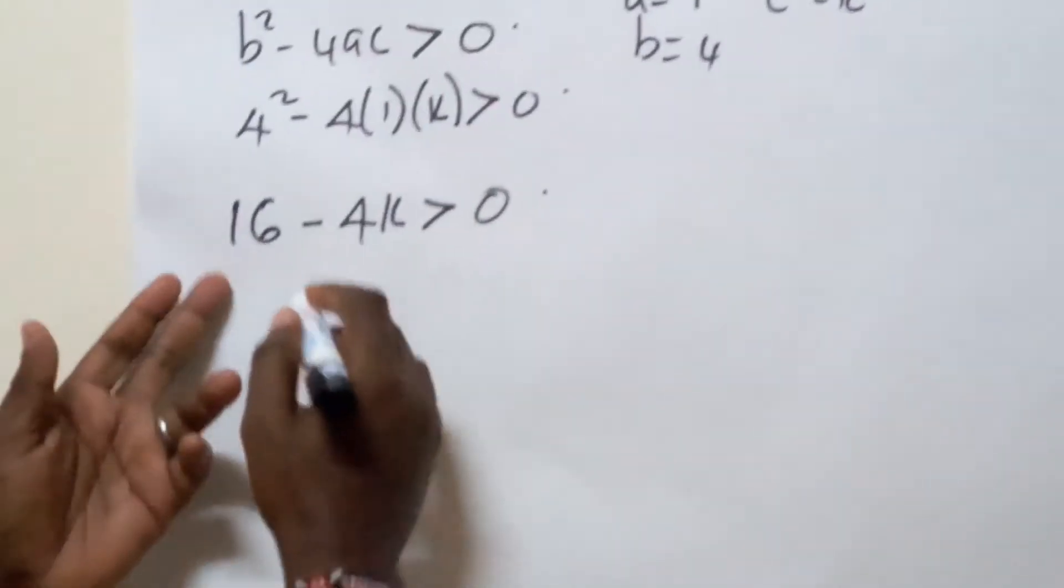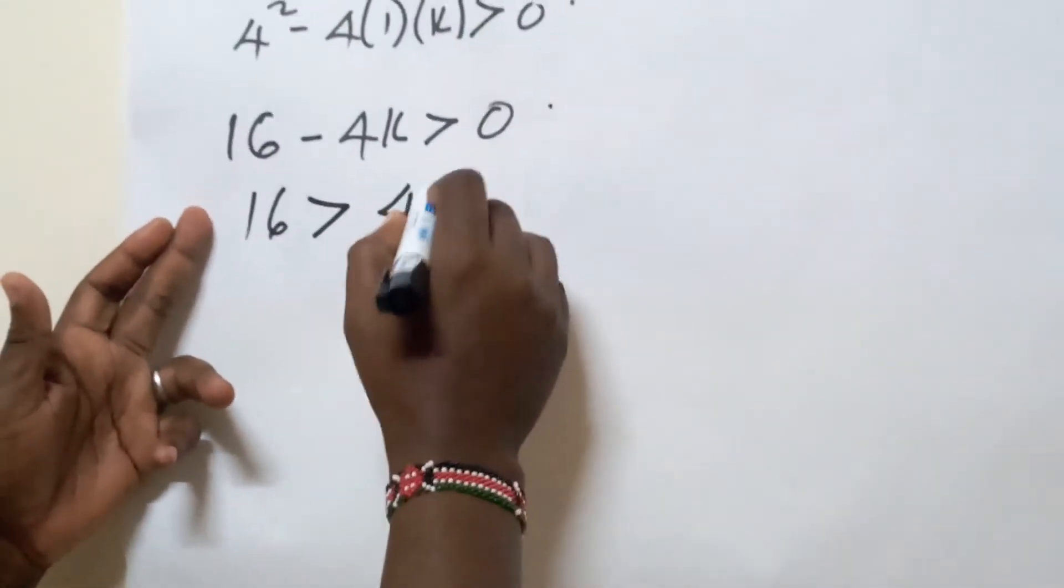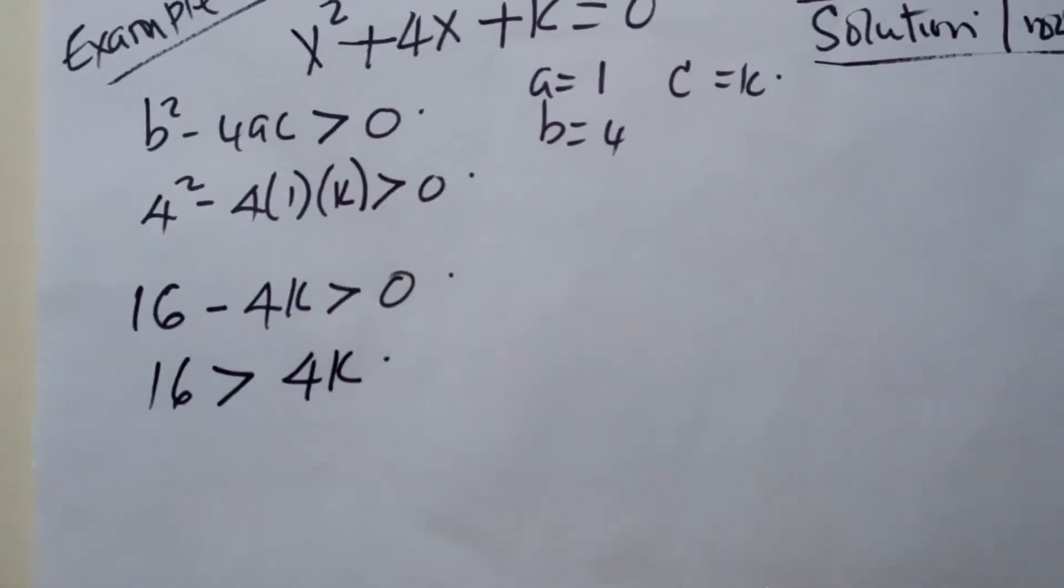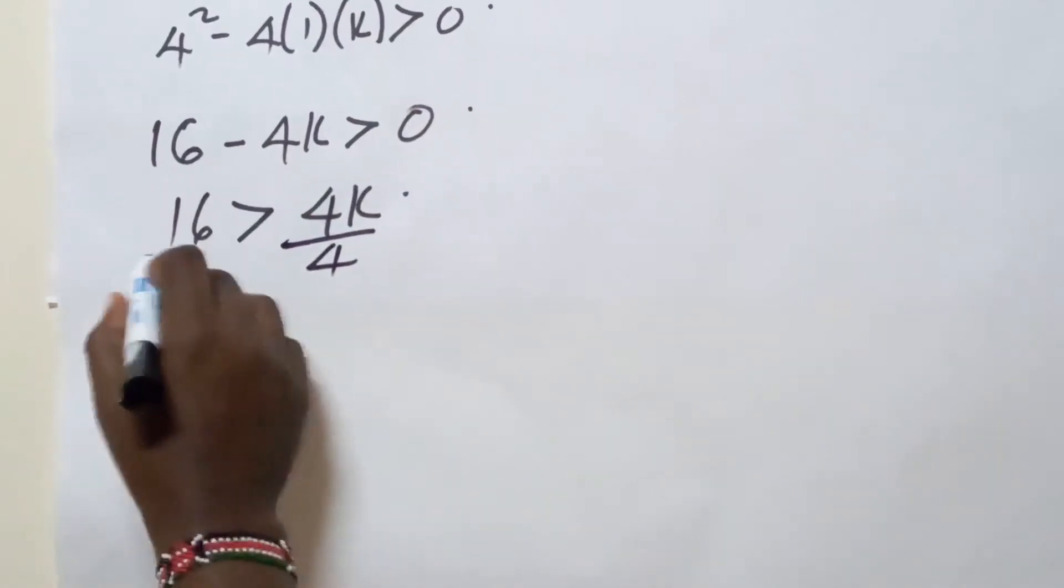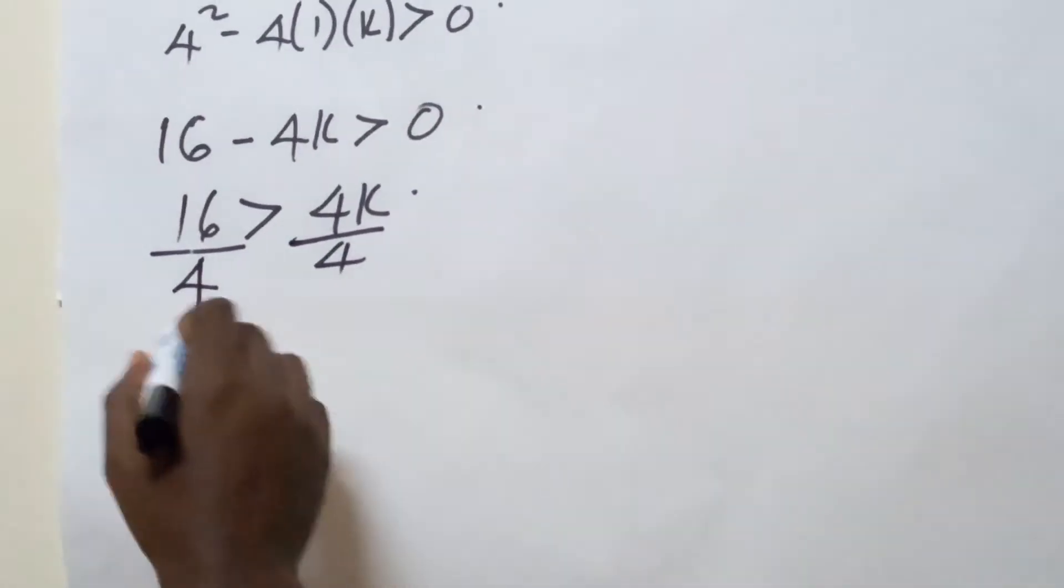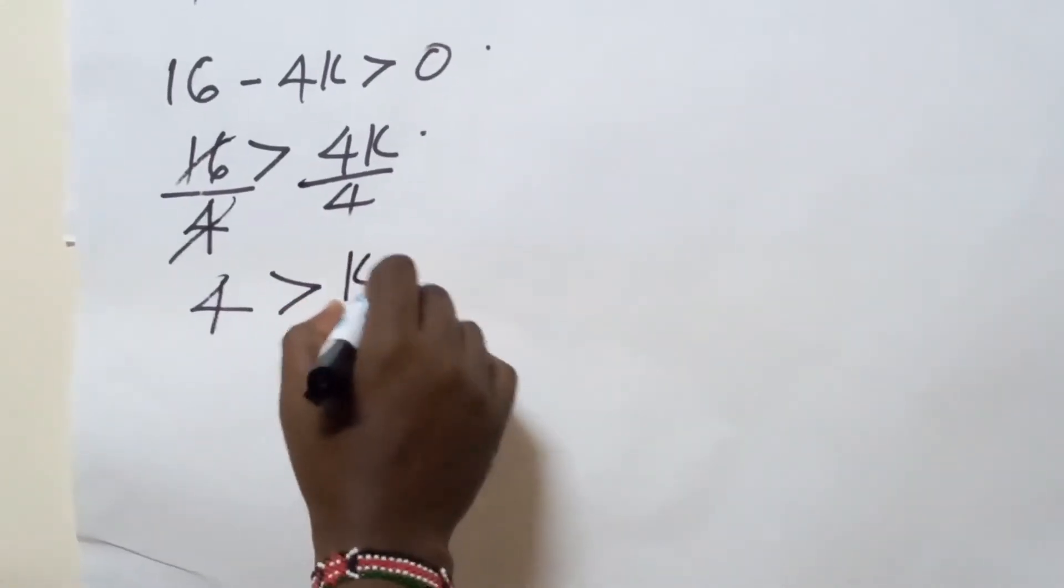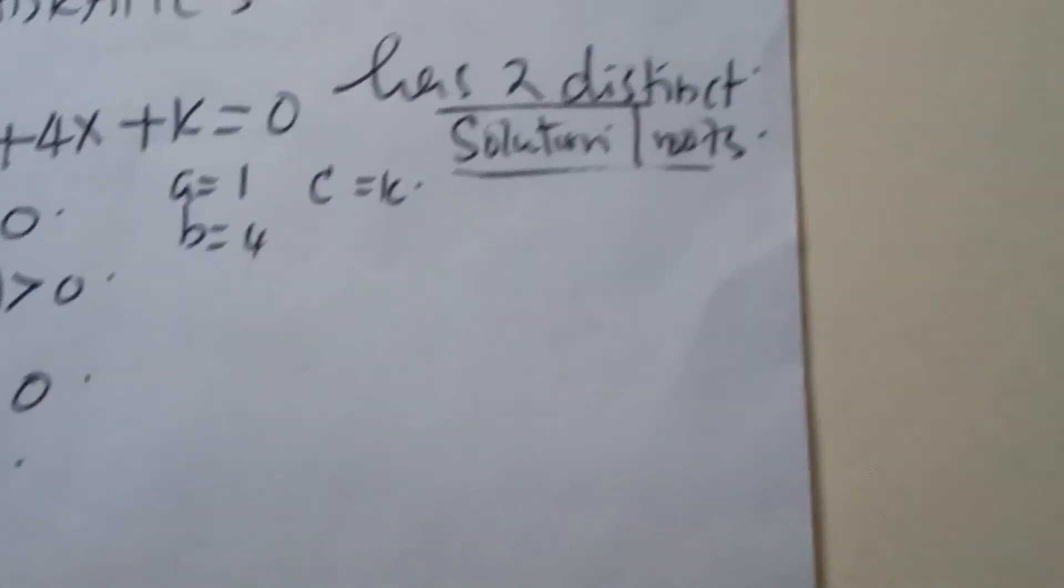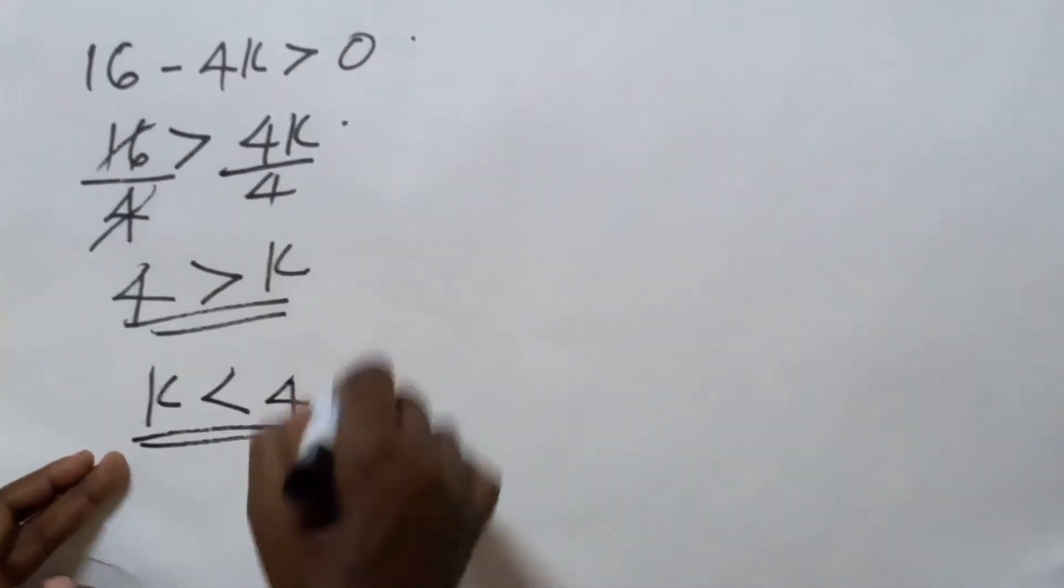And it goes without saying, what we are simply saying is that 16 is greater than 4k. If you happen to divide by 4 on both sides in an attempt to clean up this equation, then we are simply having 4 has to be greater than k, or for this to be realized, our value of k has to be less than 4.